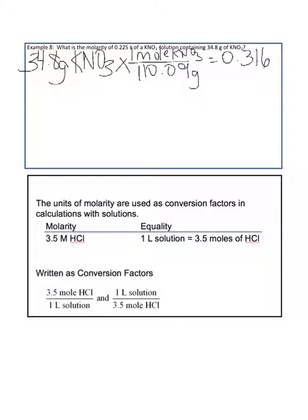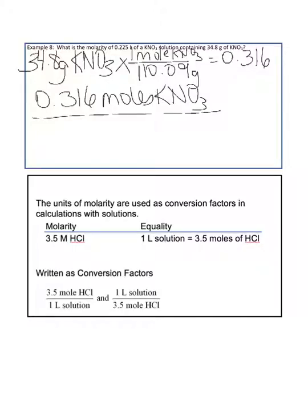Now for the molarity: 0.316 moles of KNO3 divided by 0.225 liters gives us a concentration of 1.40 molar — a nice strong solution of 1.40 M KNO3.